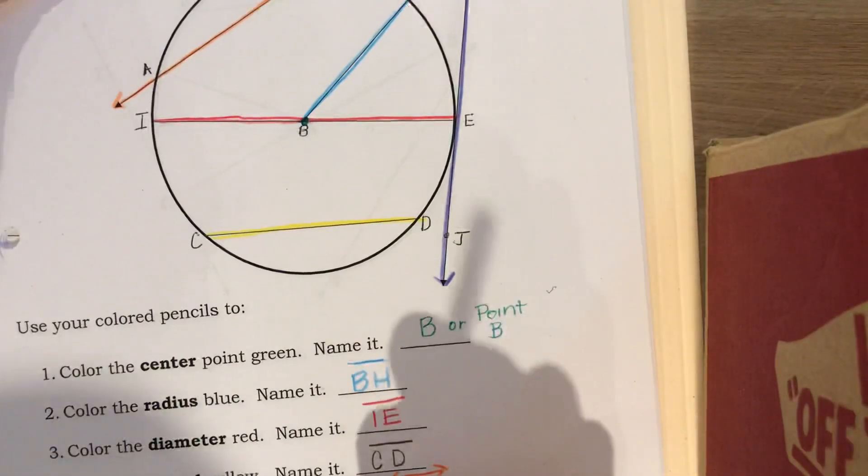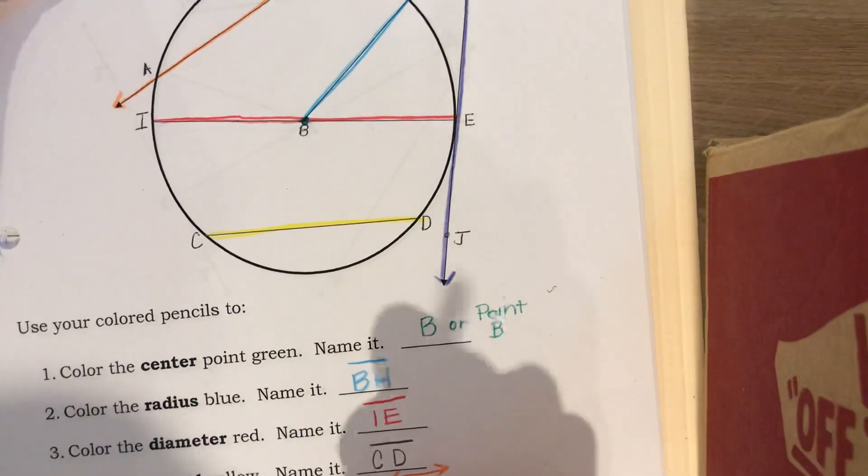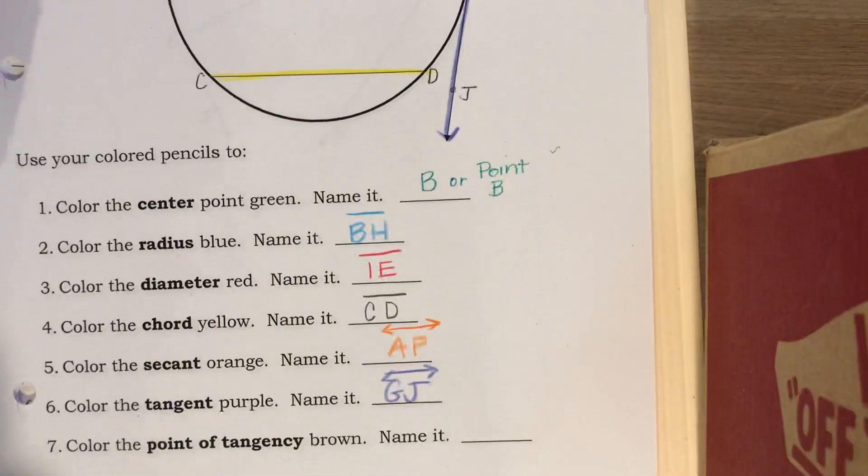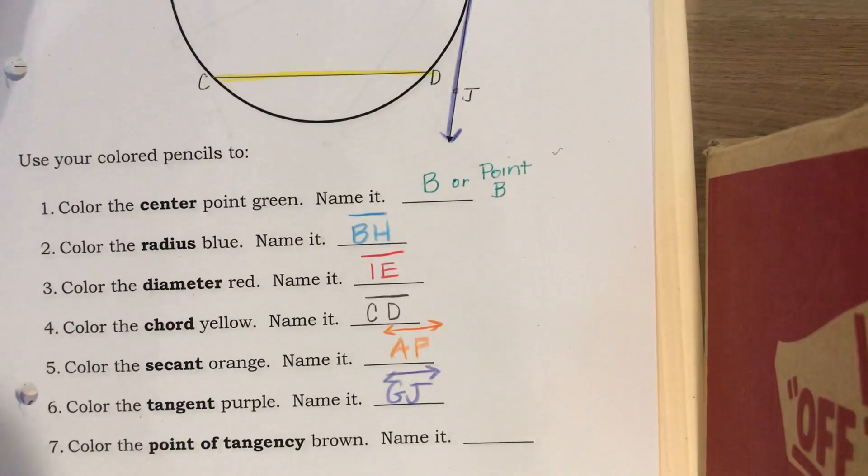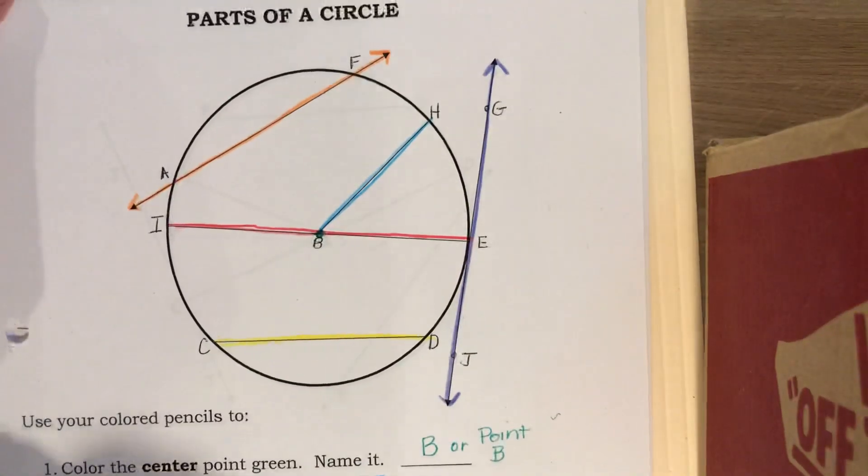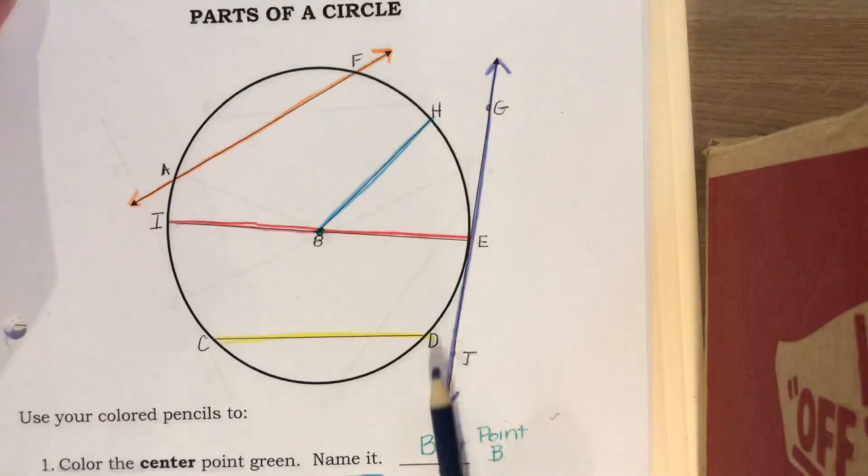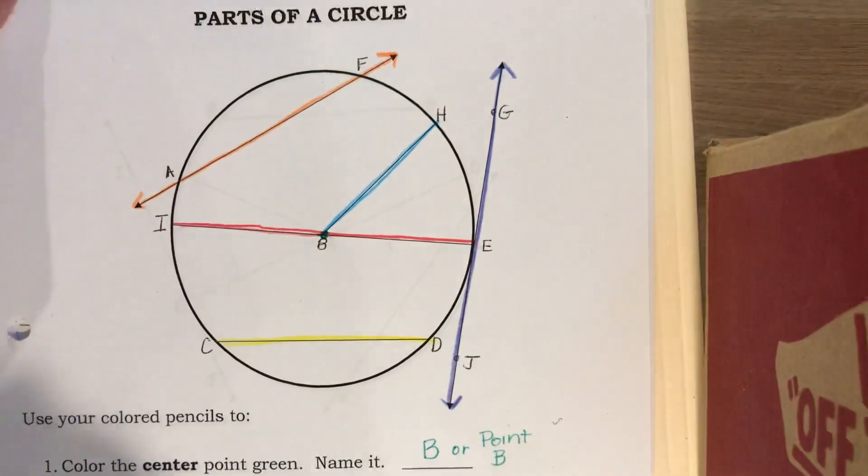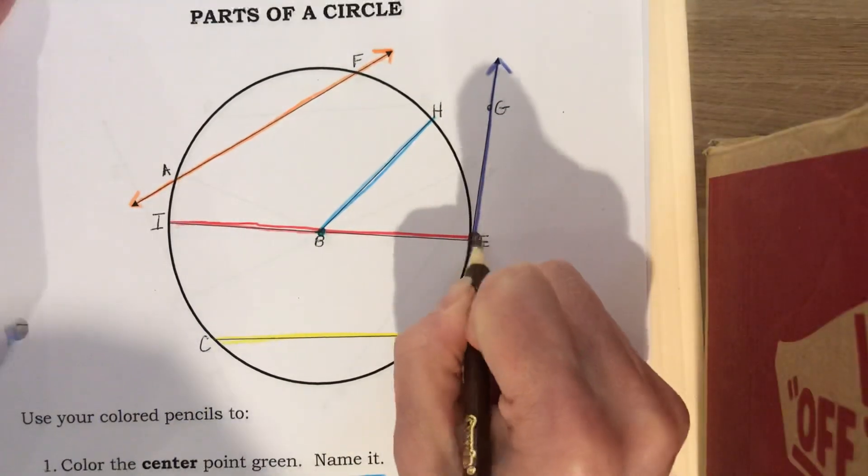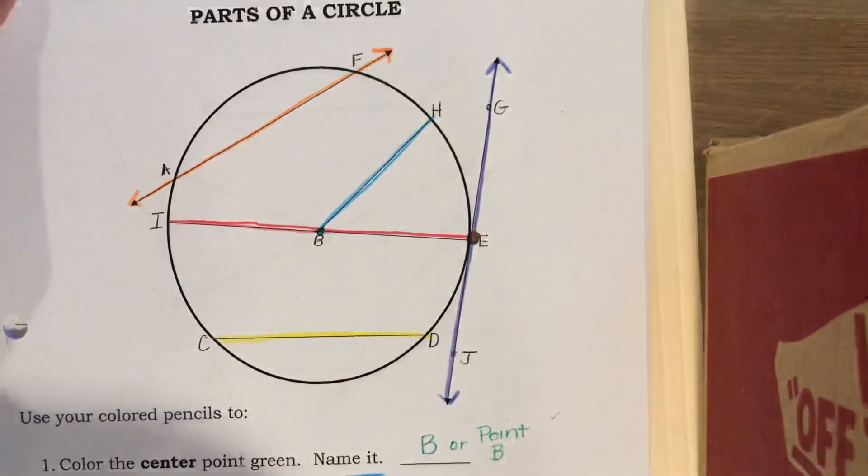And the point of tangency is brown. In our picture, where does that tangent line touch the circle? It touches the circle at point E. Point E is our point of tangency.